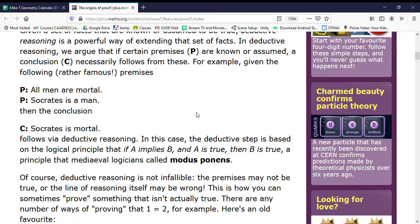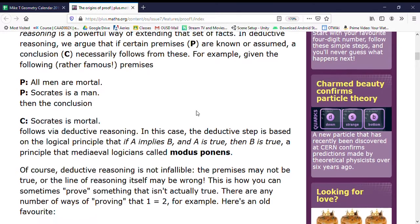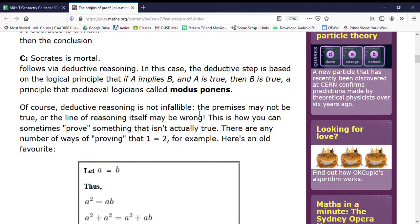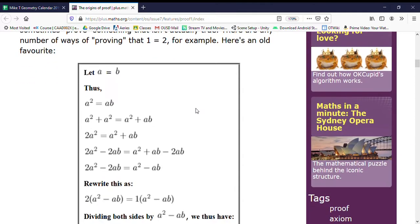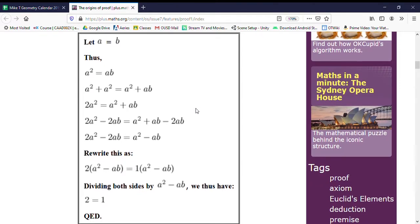Of course, deductive reasoning is not infallible. The premises may not be true, or the line of reasoning itself may be wrong. This is how you can sometimes prove something that isn't actually true. There are a number of ways of proving that one equals two. So take a look at this and see if you can find why that happens, and I'll ask you about it and kind of give it away.